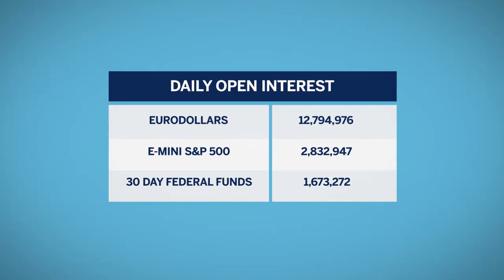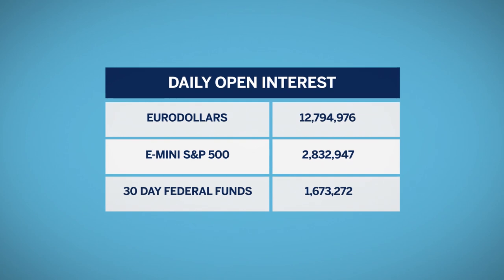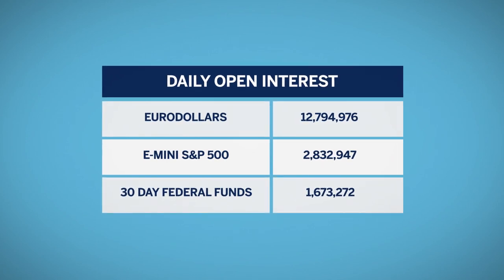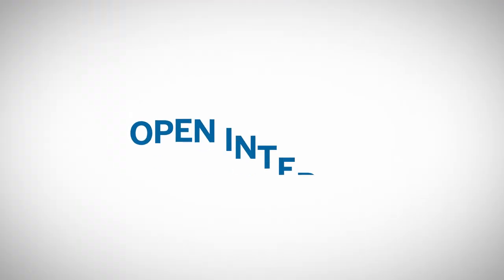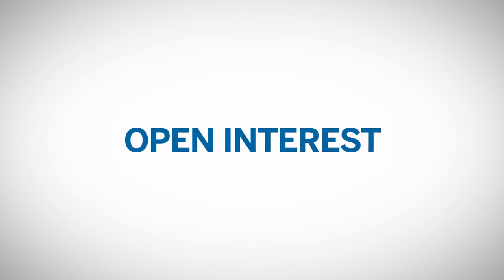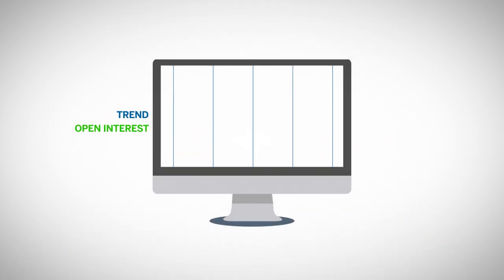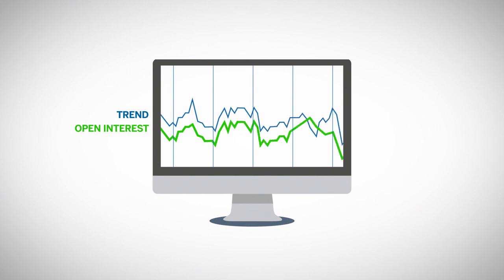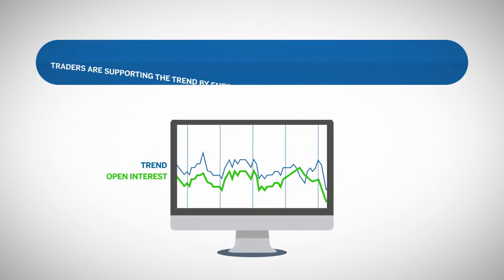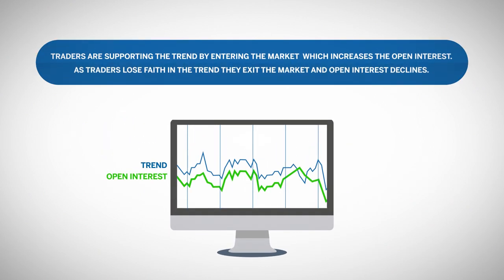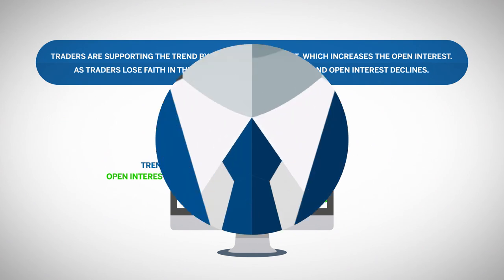CME Group's products with the largest open interest include euro dollars, treasuries, and stock index futures. Analysts typically use open interest to confirm the strength of a trend. Increasing open interest is typically a confirmation of the trend, whereas decreasing open interest can be a signal that the trend is losing strength. The idea is that traders are supporting the trend by entering the market, which increases the open interest. As traders lose faith in the trend, they exit the market and open interest declines.